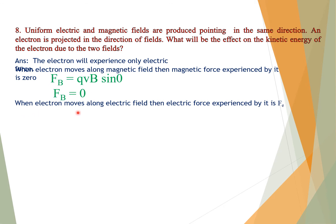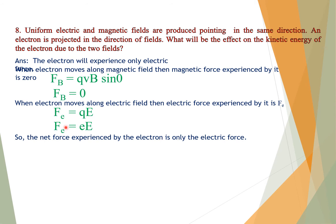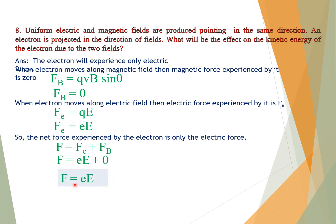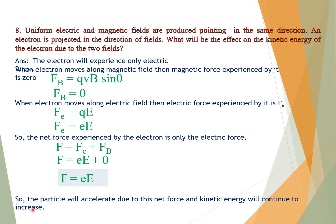When the electron moves along the electric field, the electric force experienced by it is F_electric = QE. So the net force on the electron is only the electric force, since F_net = F_electric + F_magnetic, and F_magnetic = 0. Therefore the particle will accelerate due to this net electric force, and its kinetic energy will continue to increase.